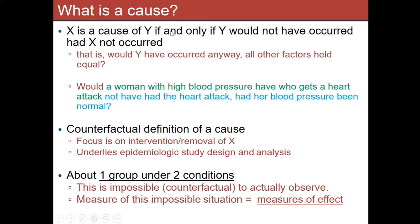There's this long definition: X is a cause of Y if and only if Y would not have occurred had X not occurred. That's the counterfactual definition of a cause. The basic idea is: would the outcome Y have happened anyway had all factors held equal if X had occurred or not occurred? If the outcome was unaffected by the exposure, then it wasn't a cause. If somehow X changed the outcome, then we would say it causes the outcome.